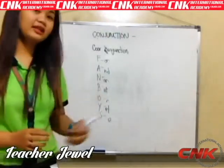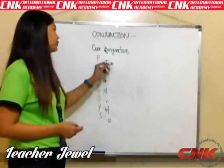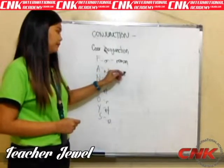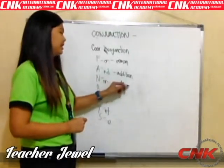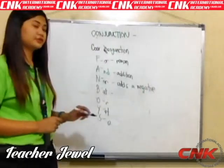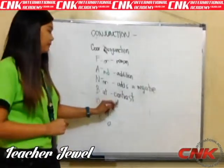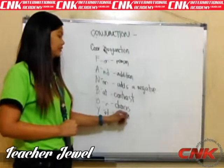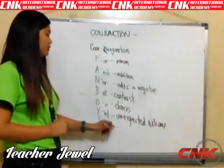Each coordinating conjunction has its own use. We use the conjunction 'for' for reason. We use the conjunction 'and' for addition. Another conjunction is 'nor' — we use 'nor' when we add a negative. And we use the conjunction 'so' for the result.